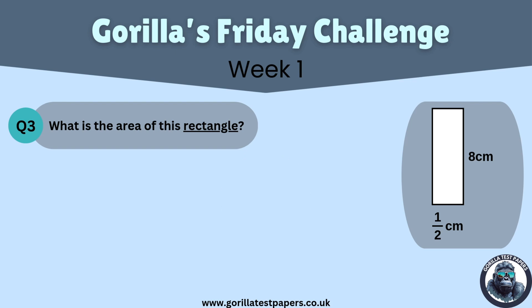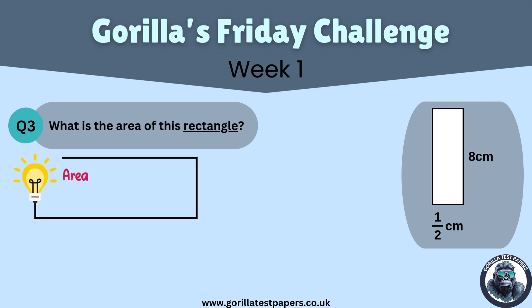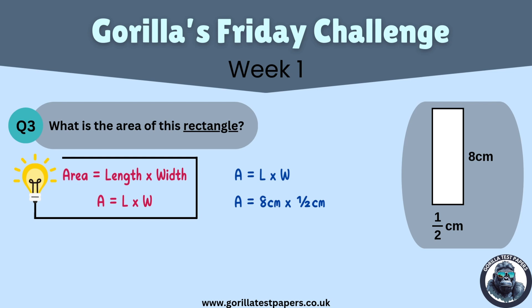Let's get started. First, we need to know the equation for area, which is area equals length multiplied by width. We then fill in our length and width using the dimensions shown on the diagram. Area equals 8cm multiplied by half a centimetre. Multiplying 8cm by 0.5cm is simply another way of saying 8 divided by 2. Therefore, the area equals 4cm squared.